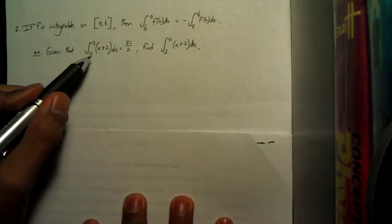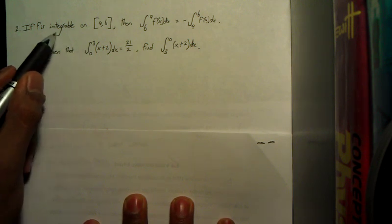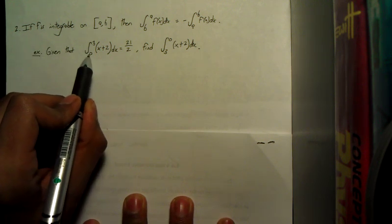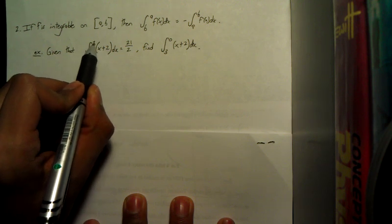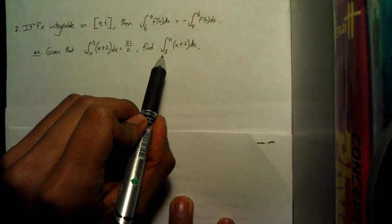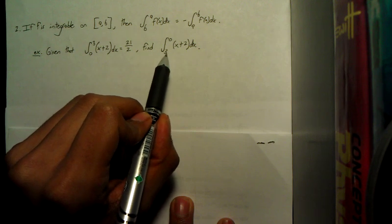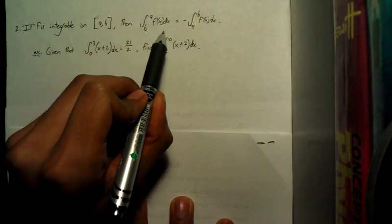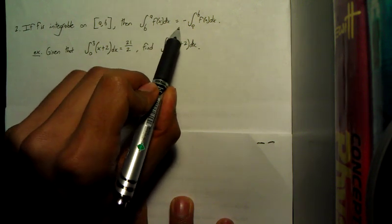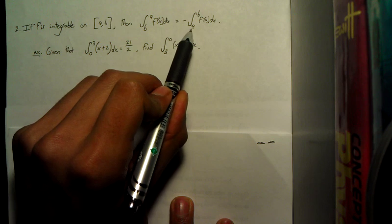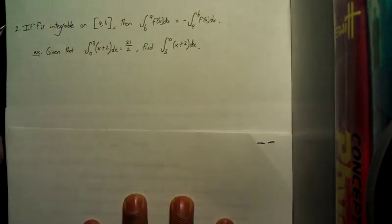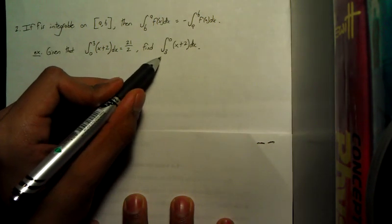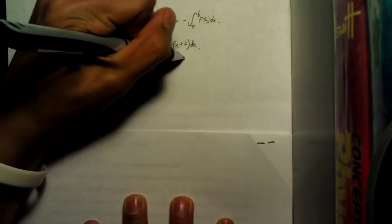So if you just check to see whether or not it satisfies the conditions, let's see. So a and b, and so it says find 3 to 0. So this is b to a, so b to a of some function, and that's just going to equal the negative of if the function were from a to b. So this right here is going to equal negative 21 over 2.